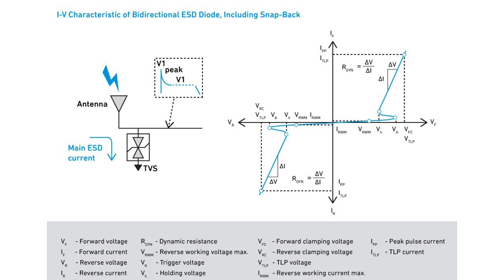Clamping voltage - it is the maximum voltage drop across the TVS diode for a particular peak pulse current.